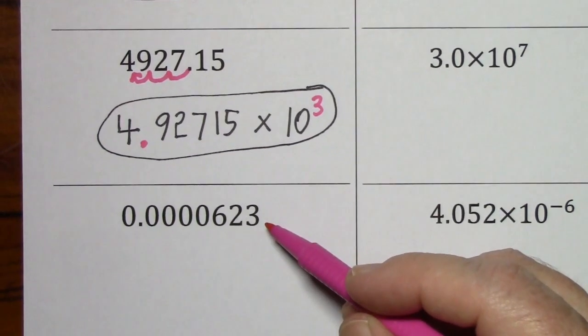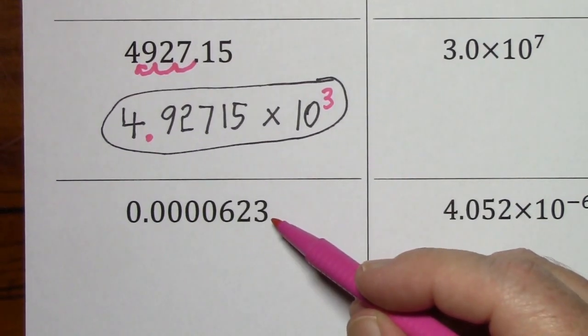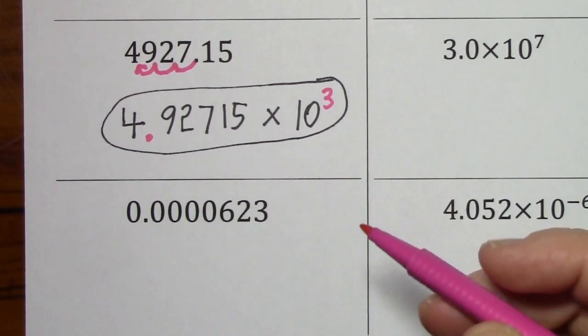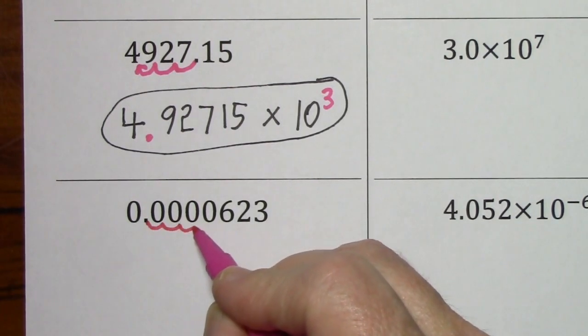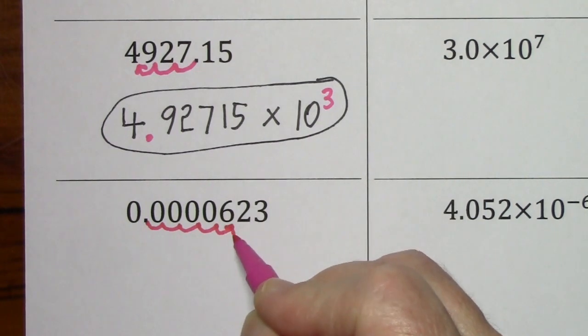Looking at our last example, if I want to change this number to scientific notation, I'm going to have to move the decimal one, two, three, four, five places.